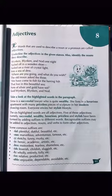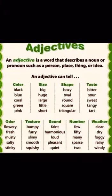Hello Classic students, Grace ma'am here. Today we'll start a new chapter from English Language — Chapter 8: Adjectives. Page number 41. An adjective is a word that describes a noun or pronoun, such as a person, place, thing, or idea. In other words, any describing word — describing size, color, shape, taste, texture, sound, or number — is called an adjective.